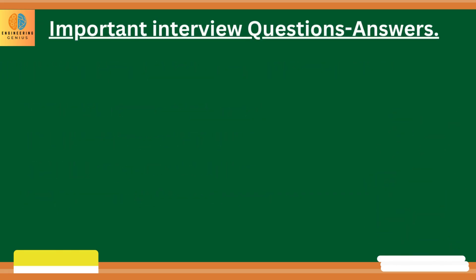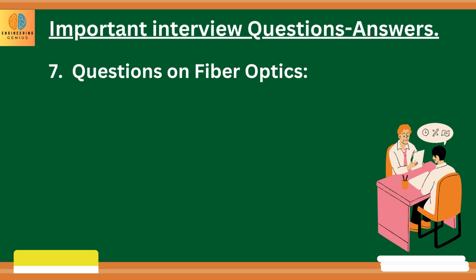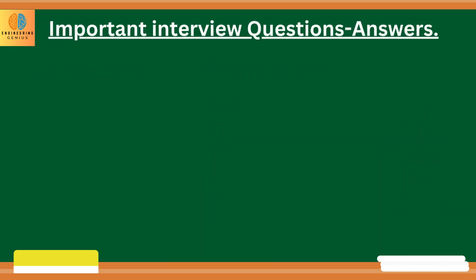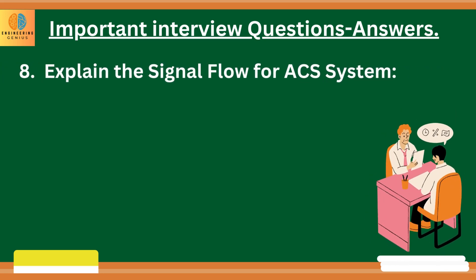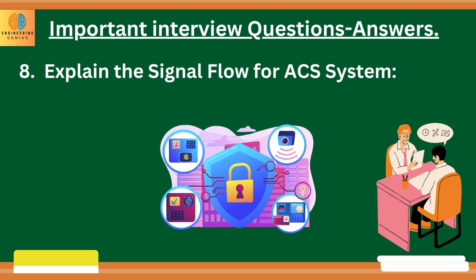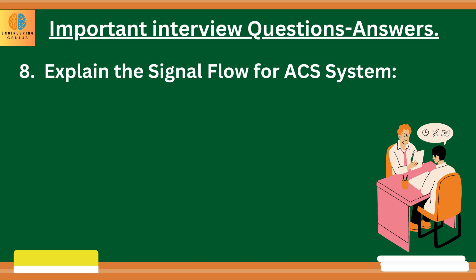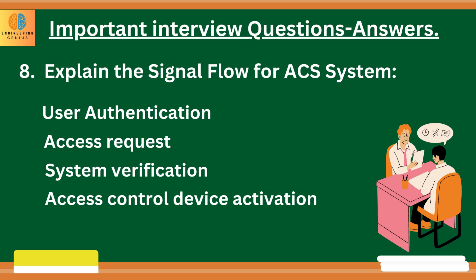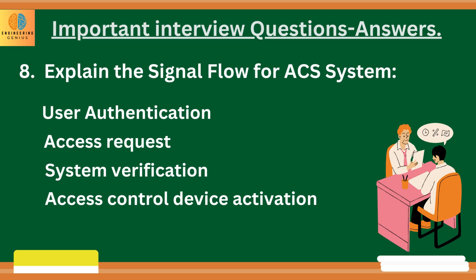You can also be asked questions related to fiber optics — refer to fiber optics interview videos linked in the description. Another important question is: explain the signal flow for access control system. First, brief the interviewer about the components of access control system. The signal flow starts from user authentication, then access request, then system verification, then access control device activation through various methods like electric strikes, magnetic locks or motorized barriers.